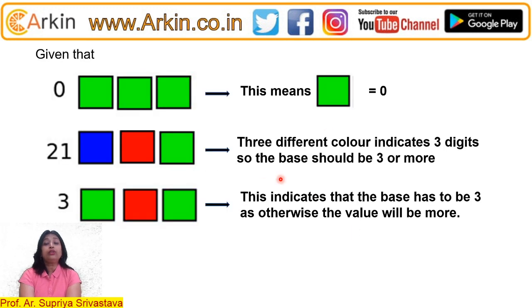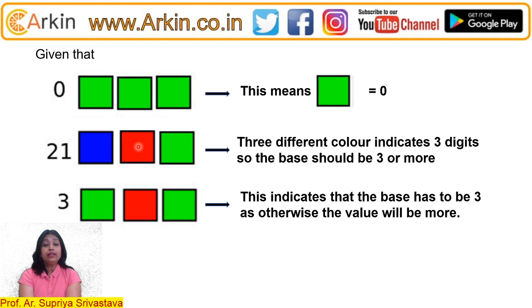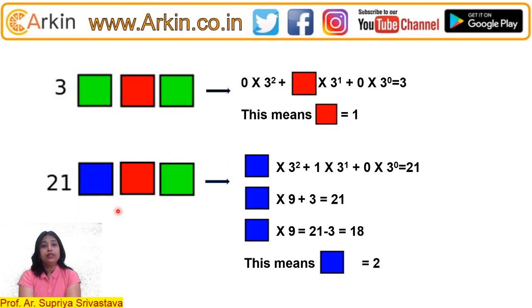So here we have to find out what the base is and what each color represents. We can see that green represents 0. There are three different colors — blue, green, and red — which indicates the base should be 3 or more. But since one of the given values is 3, the base has to be exactly 3, because if the base were more than 3, that value would be larger than 3.